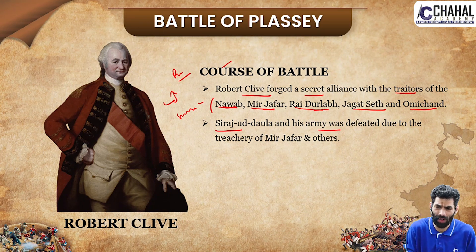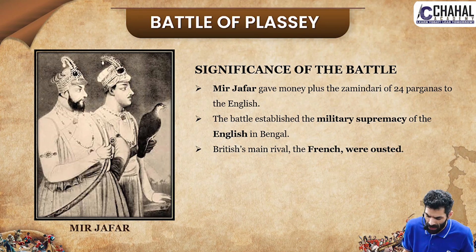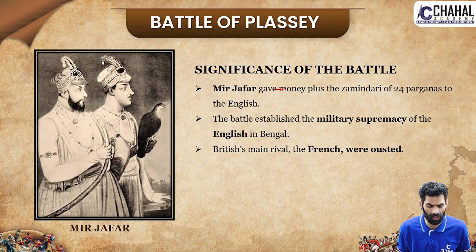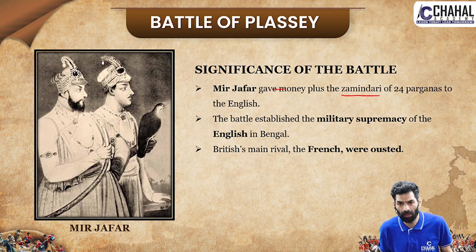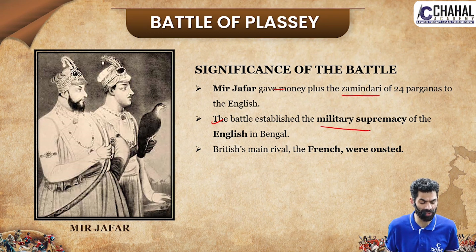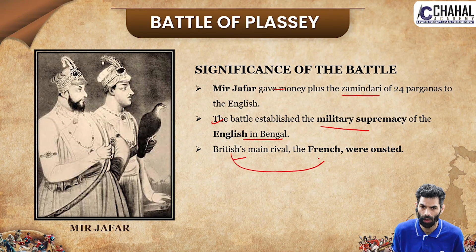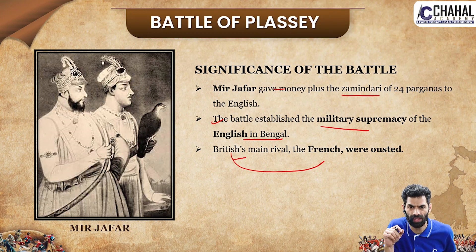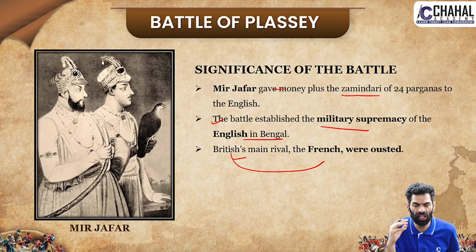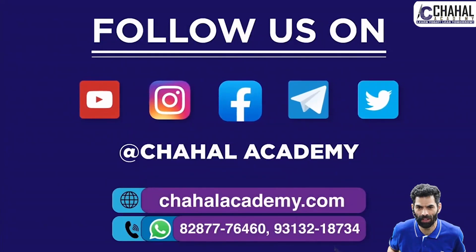Due to internal conflicts, Siraj ud-Daulah was defeated and Mir Jafar became the new Nawab of Bengal. As a result of the Battle of Plassey, Mir Jafar gave a large sum of money and granted rights over 24 villages to the East India Company. The battle established the military supremacy of the English in Bengal, ended French influence, and marked the beginning of the drain of wealth from India. This concludes our discussion — stay safe and stay blessed. Bye bye.